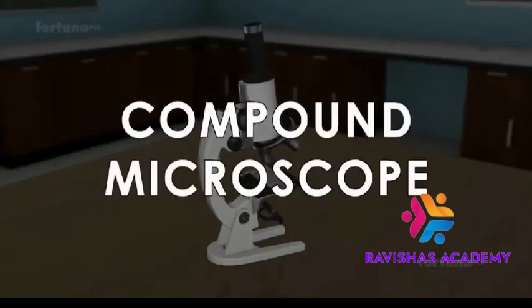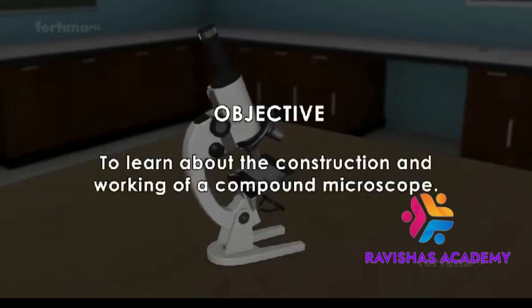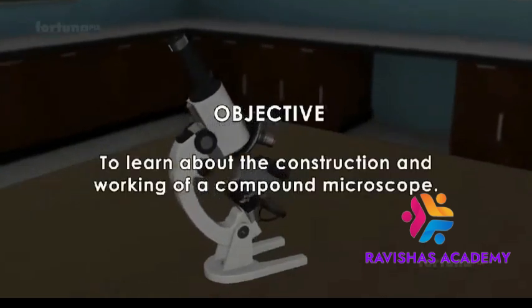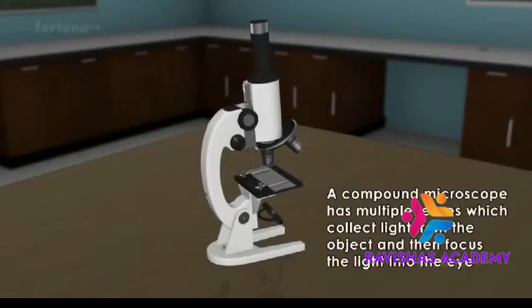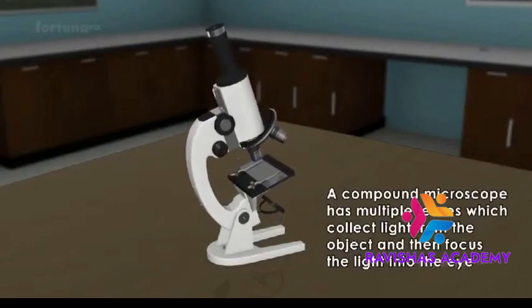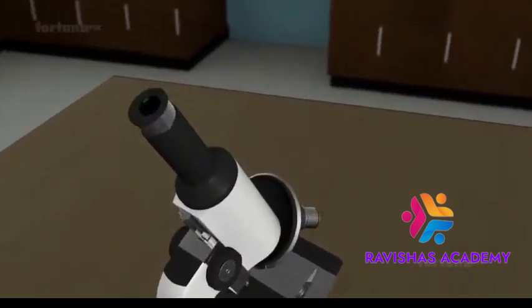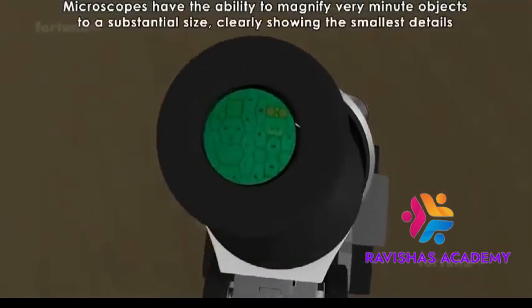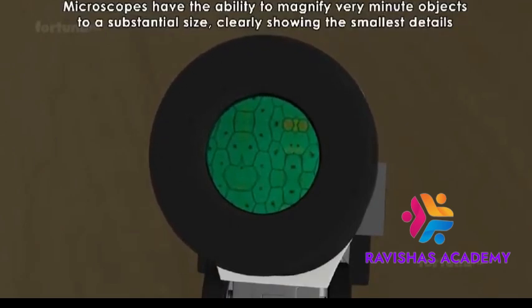Compound microscope. To learn about the construction and working of a compound microscope. A compound microscope has multiple lenses which collect light from the object and then focus the light into the eye. These microscopes have the ability to magnify very minute objects to a substantial size, clearly showing the smallest details.